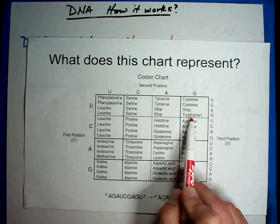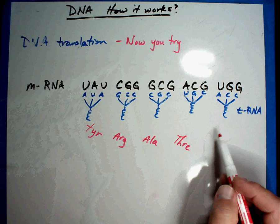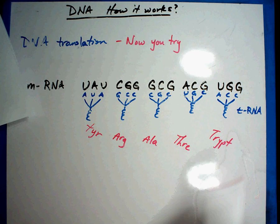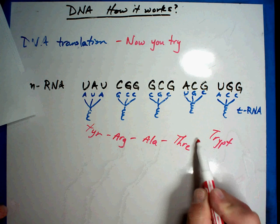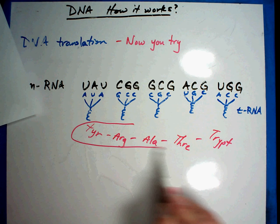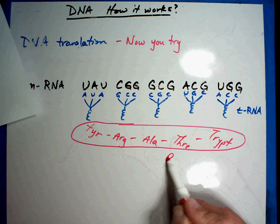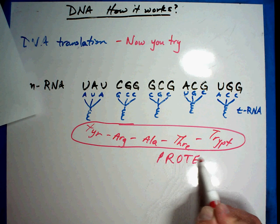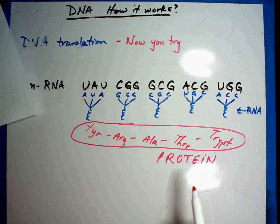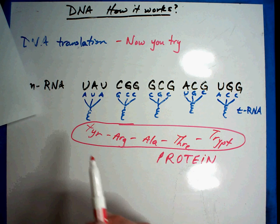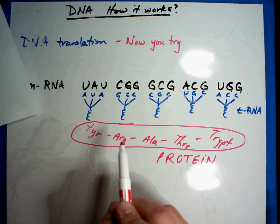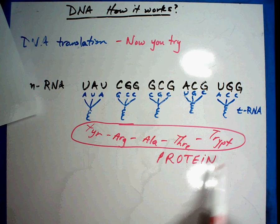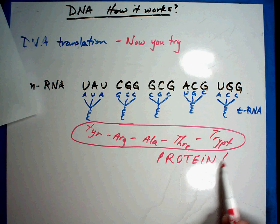Tryptophan. Each of these will attach to each other and this becomes your protein. The protein is actually sent to the part of the cell it's needed and tells it exactly how to work. So the secret code has been made into a protein that tells the cell how to work.